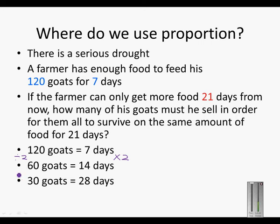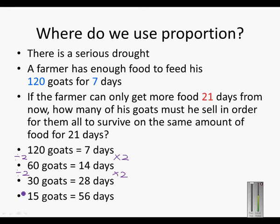If we again halve the amount of goats — so 60 divided by 2 is 30 — we can again keep them for double the amount of days: 14 times 2 is 28 days. If we again halve the amount of goats — so 30 divided by 2 is 15 — we can keep them for twice the amount of days again: 28 times 2 is 56 days.